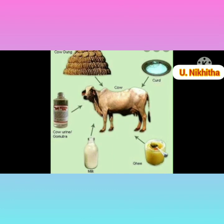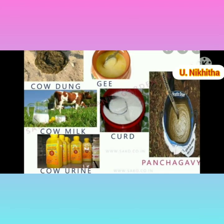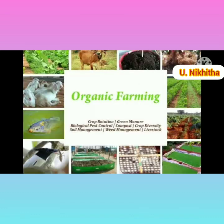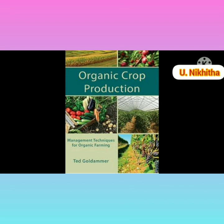Panchagavia is a term used to describe five major substances obtained from a cow, which include cow's urine, milk, ghee, curd, and dung. All five products possess medicinal properties against many disorders and are used for medicinal purposes, singly or in combination with other herbs. Organic farming is defined as the production of crops, animals, and other products without the use of synthetic chemical fertilizers, pesticides, and chemicals. Thank you.